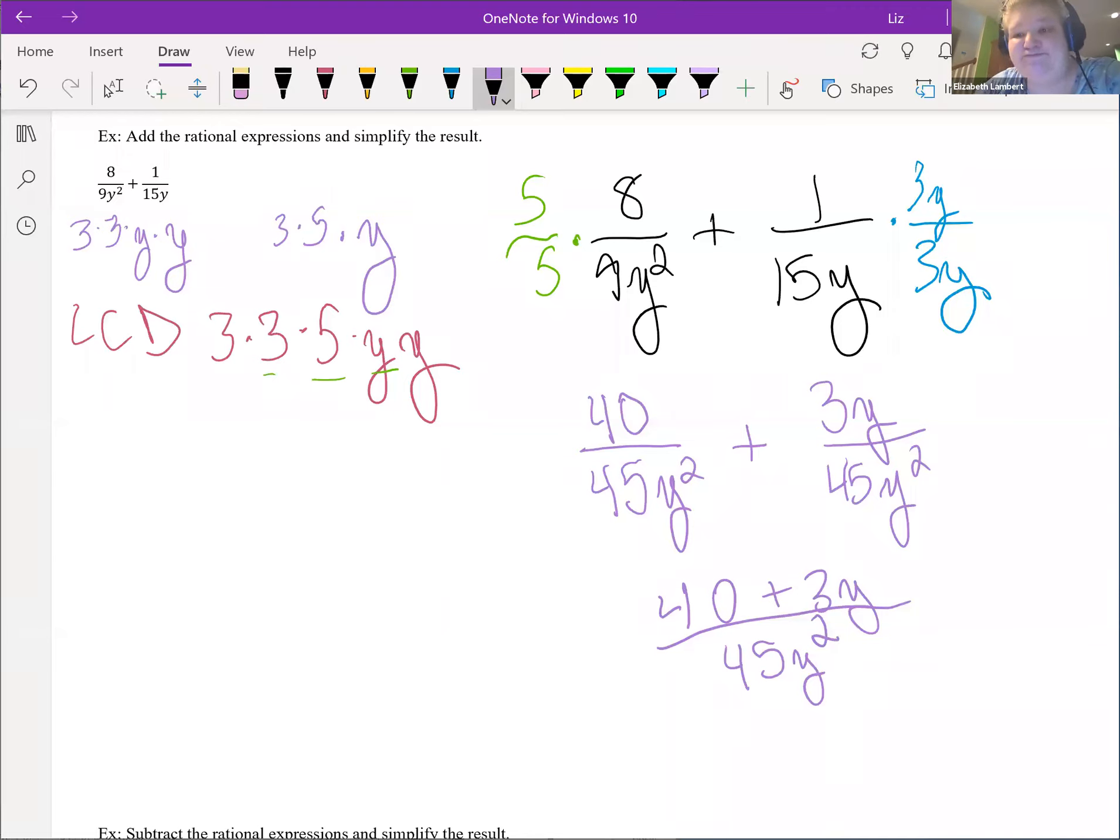And that's it. Normally we would check to see if something reduces. They don't have a y. All the terms can't be divided by 3. And then 3y is the smallest term. So if I can't simplify that any, then I'm done. Now you could write it 3y plus 40 all over 45y squared. But it really doesn't matter.